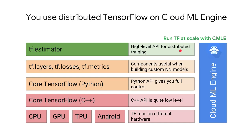In this course, we will work with TensorFlow at the TF Estimator level of abstraction. Cloud ML Engine is orthogonal to this hierarchy — regardless of which abstraction level you're writing your code at, CMLE gives you a managed service for training and deploying TensorFlow models.